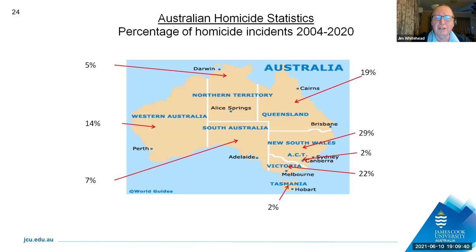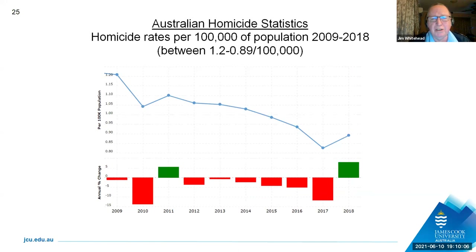Looking at homicide statistics in broad terms — I've only done this since 2004 when we started putting all our data on computers, prior to that it was paper-based — Queensland accounts for about 19% of all homicides in Australia, so it's a relatively good representation of what occurs in other states. Homicide has gradually decreased over the last few years, despite what you would hear on the news. It's been going down until about 2017, and now we're starting a small slide upwards.